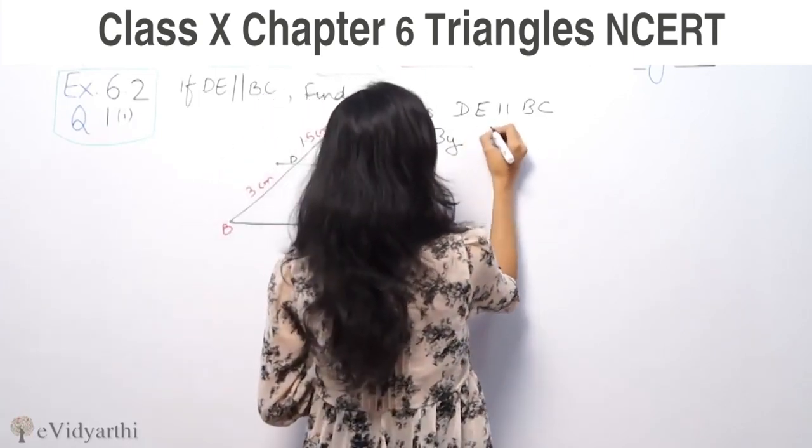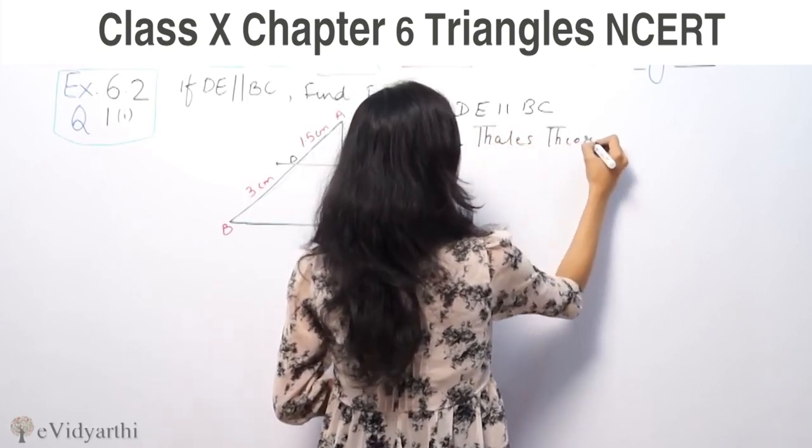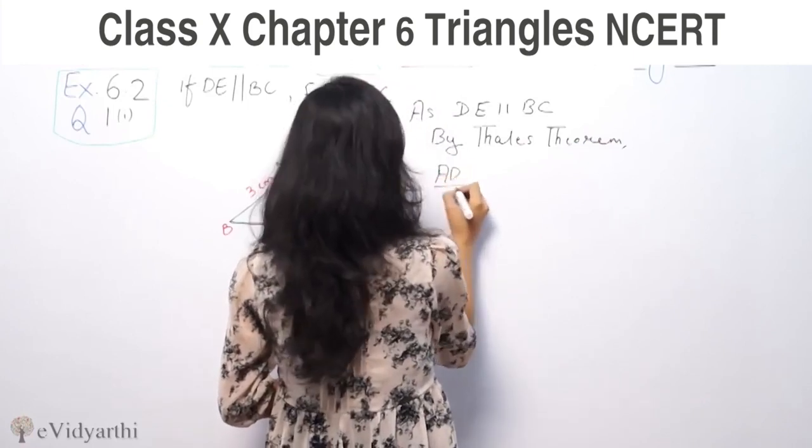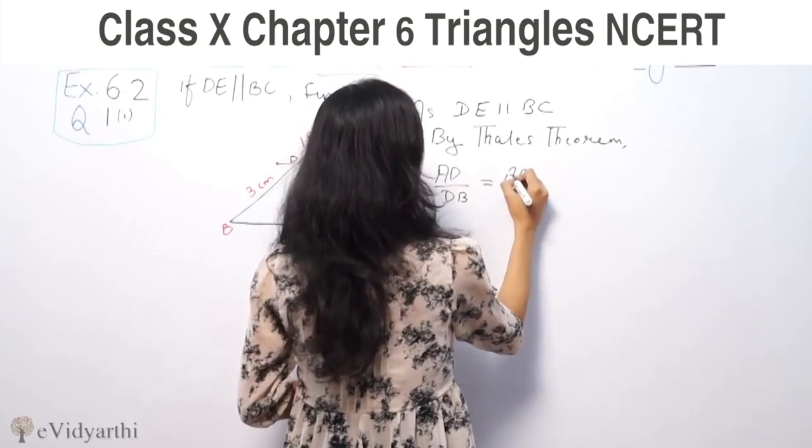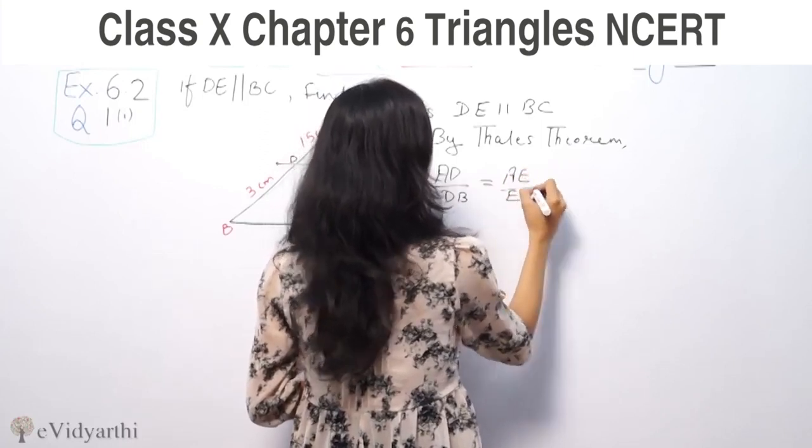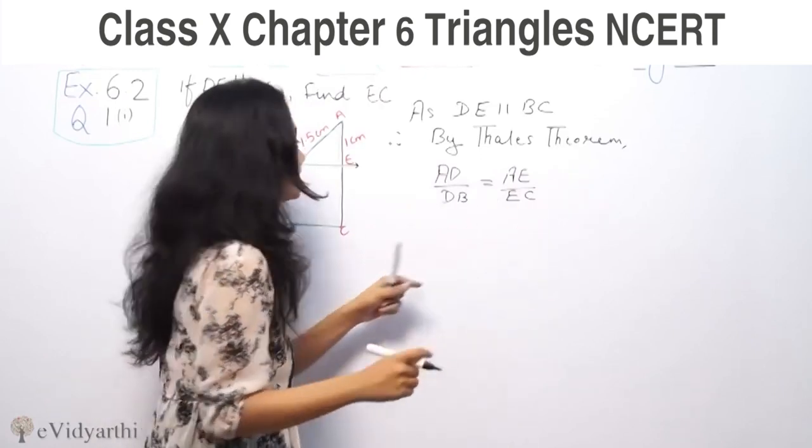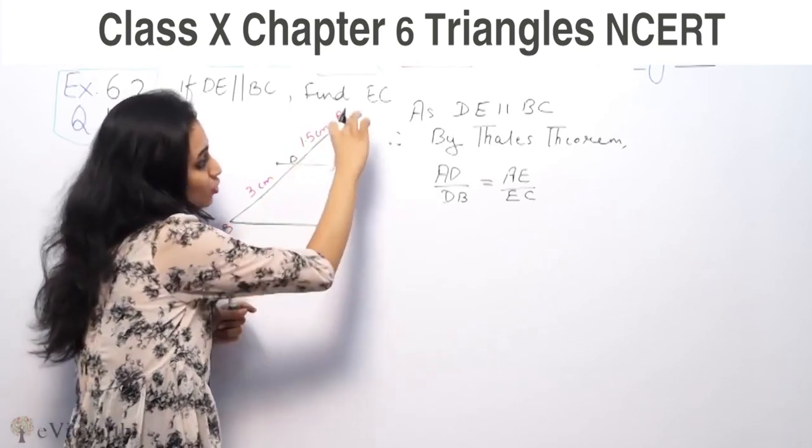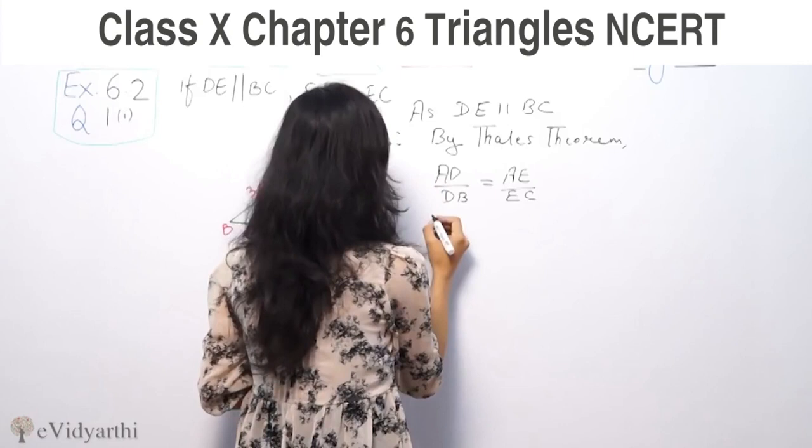By Thales theorem, AD upon DB is equal to AE upon EC.